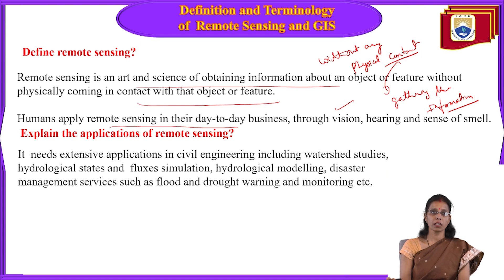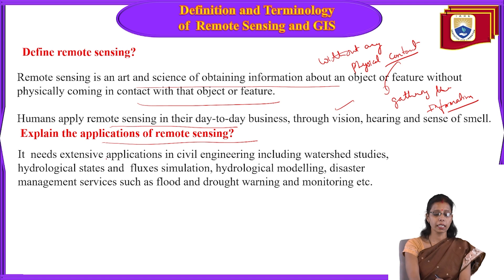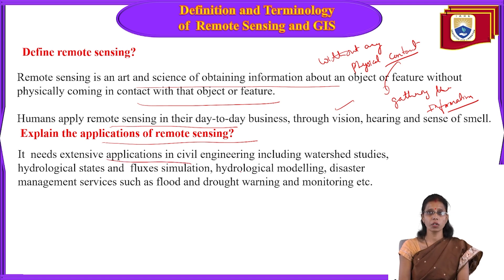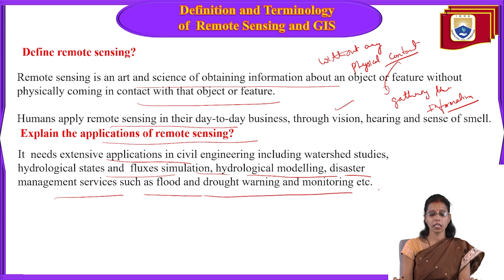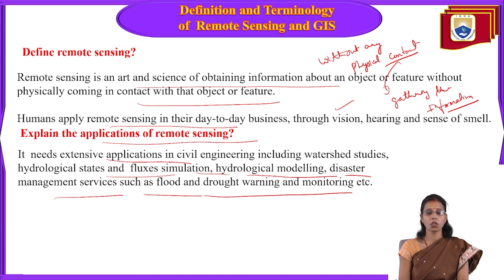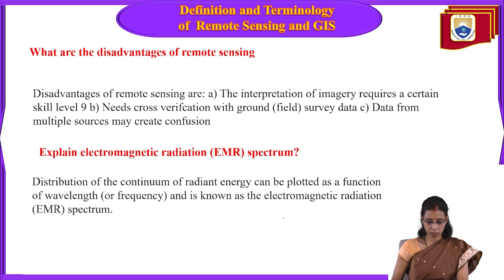The applications of remote sensing in civil engineering include watershed studies, hydrological states, fluxes, simulation, hydrological modeling, and disaster management services such as flood, drought warning and monitoring systems.